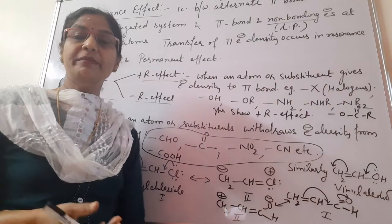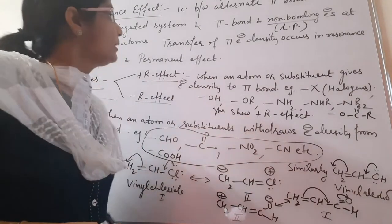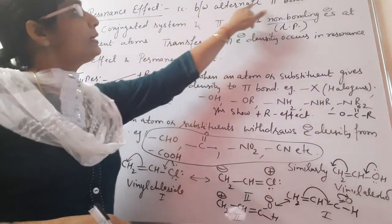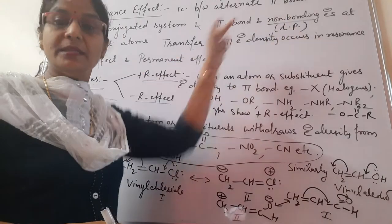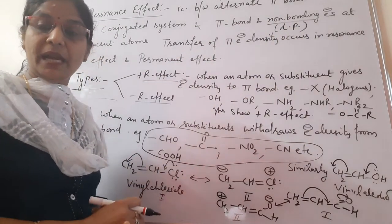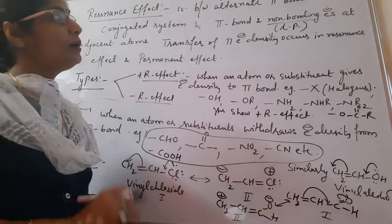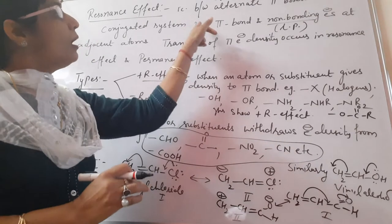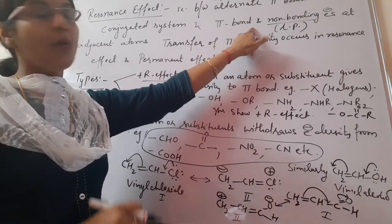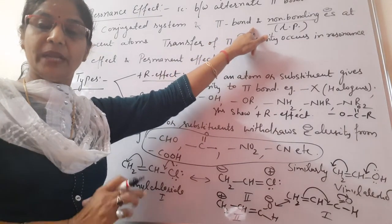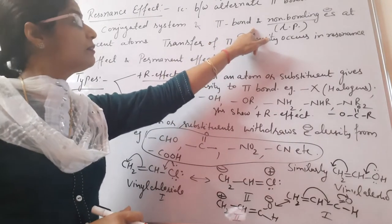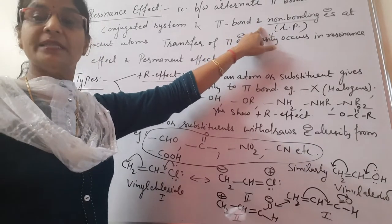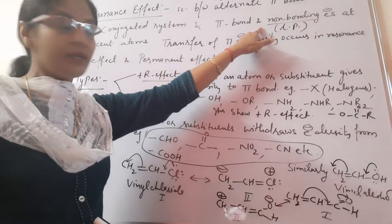Dear students, today we will discuss the resonance effect. Resonance effect occurs between alternate pi bonds, that is in a conjugated system where single and double bonds are present at alternate positions in a carbon compound. It may also occur between a pi bond and a non-bonding electron pair present at an adjacent atom.